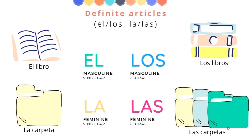Now, definite articles: el, los, la, las. El is masculine and is for singular nouns. For example, el libro. Los is masculine and is used for plural nouns. For example, los libros. La is feminine and is used for singular nouns. Por ejemplo, la carpeta. Las is feminine and is used for plural nouns. Por ejemplo, las carpetas.